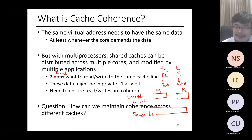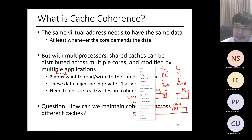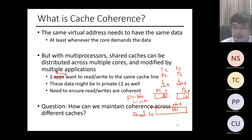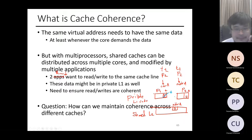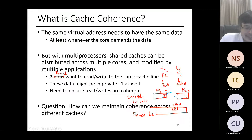Let's say we want to write a new value to address A. Originally, address A has a value of five in all caches. Thread one comes in and says it wants to change the value to six. It updates to six. Because we use a writeback policy, we haven't evicted the cache block yet. From processor two's point of view, if it reads address A, it will still see five.